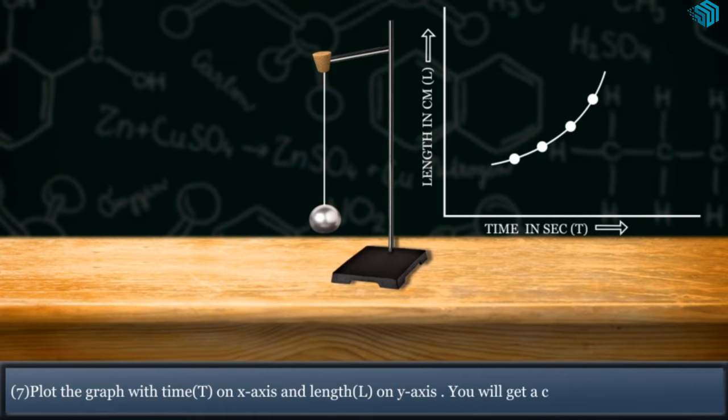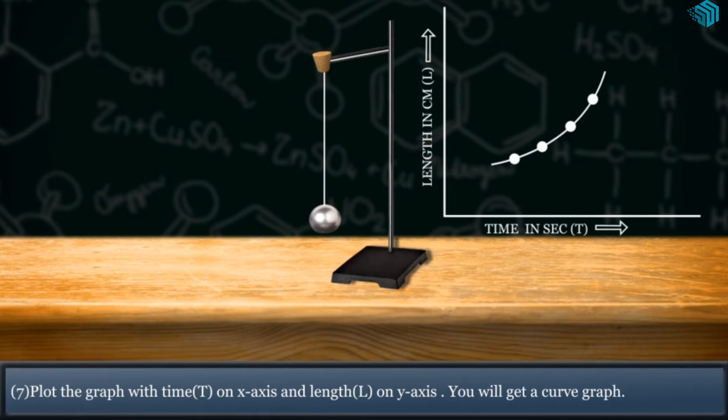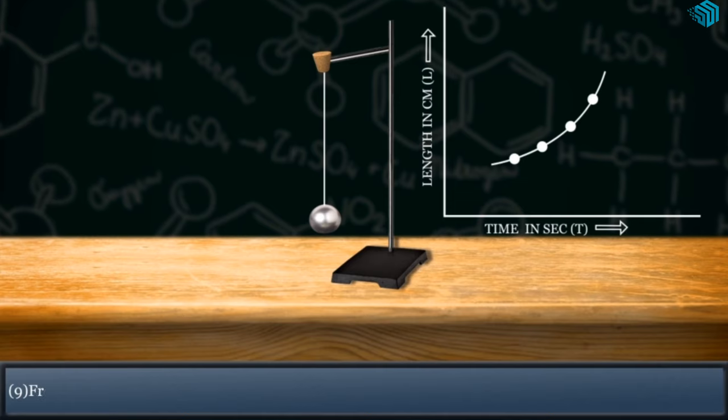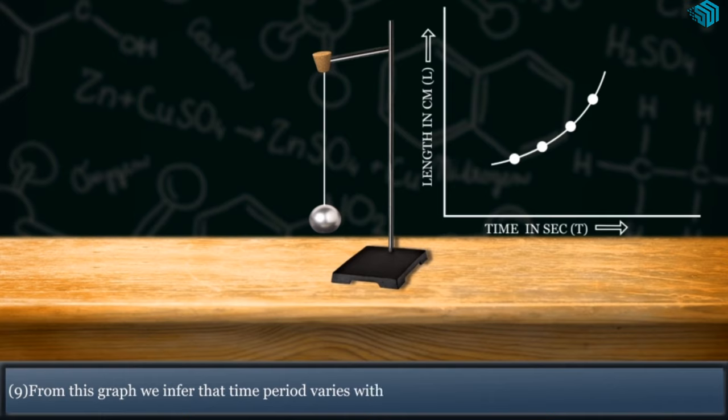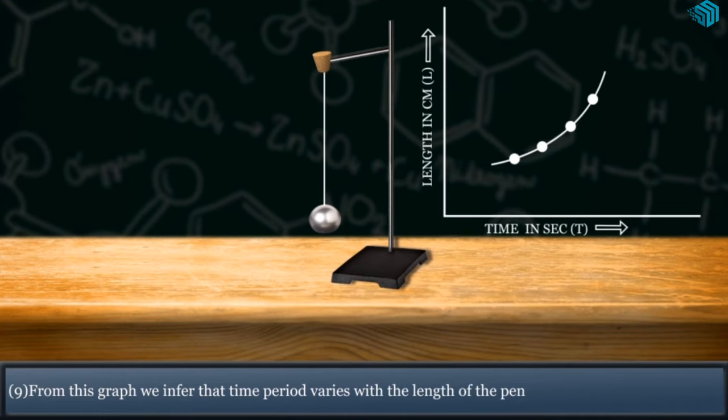You will get a curve graph. From this graph we infer that time period varies with the length of the pendulum.